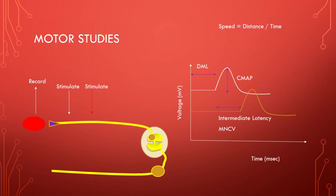For motor studies, we record over the muscle belly. When we stimulate the nerve distally, the signal must travel across the nerve, cross the neuromuscular junction, and depolarize the muscle to produce contraction. Because of variability in timing across these events, we record the distal motor latency (DML) — the time between stimulating the nerve and the start of contraction — and the amplitude, called the CMAP. Stimulating more proximally allows us to calculate the motor nerve conduction velocity for that nerve segment.